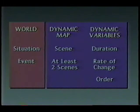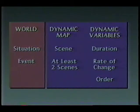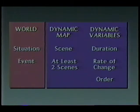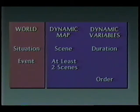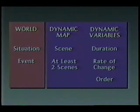Zegel refers to a coherent sequence of two or more situations as an event. The representation of an event thus requires two or more scenes, which may be superimposed on a static map or sequenced in an animation. Animation becomes the more clearly preferable alternative as the number of scenes increases. A second dynamic variable — rate of change — becomes available in the animation of an event.